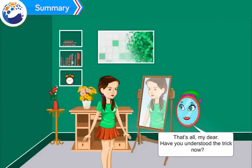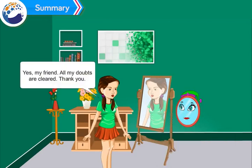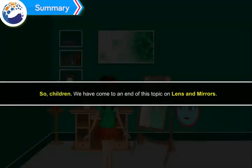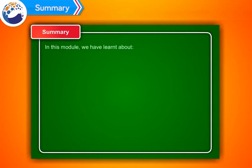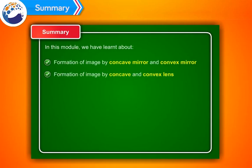That's all, my dear — have you understood the trick now? Yes, my friend, all my doubts are cleared, thank you. So children, we have come to an end of this topic on lenses and mirrors. In this module we have learned about the formation of images by concave and convex mirrors, formation of images by concave and convex lenses, and problems of the eyes.